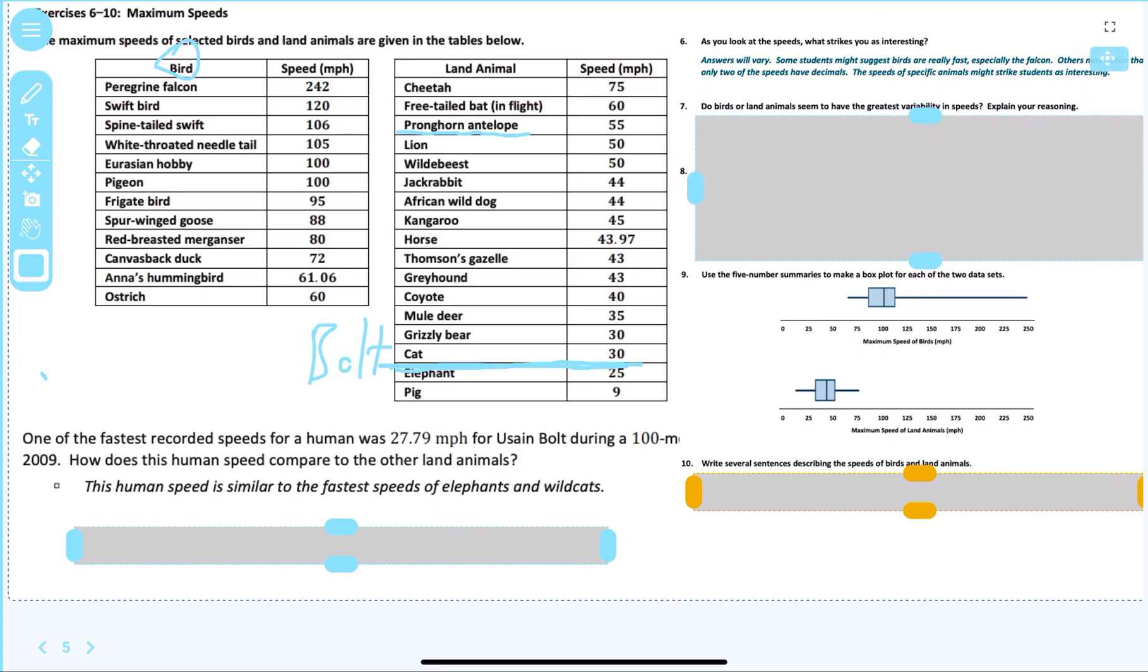Some students might suggest that birds are really fast, especially the falcon. Others might suggest that only two of the speeds have decimals. Do birds or land animals seem to have the greatest variability in speed? Birds are 242 minus 60, which is going to be a difference or variability of 182. This is only 75, so maybe 66. So definitely the bird has the greater variability.